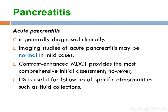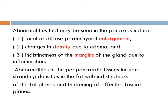Acute pancreatitis is generally diagnosed clinically. Imaging study of acute pancreatitis may be normal in mild cases. Contrast-enhanced multi-detector CT provides the most comprehensive initial assessment; however, ultrasound is useful for follow-up of specific abnormalities such as fluid collection. The abnormalities that can be seen in acute pancreatitis include focal or diffuse pancreatic enlargement, change in density due to edema, and indistinct margins due to inflammation. Abnormality in peripancreatic tissue includes stranding densities in the fat, indistinct fat planes, and thickening of affected fascial planes.